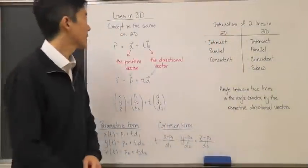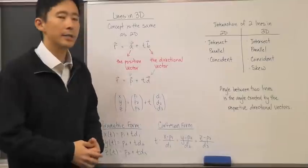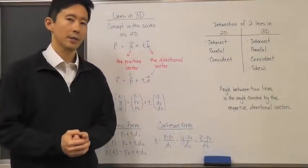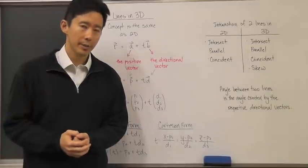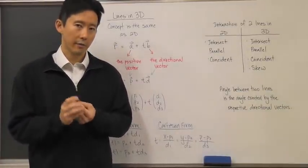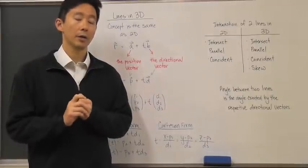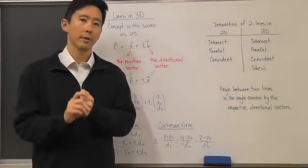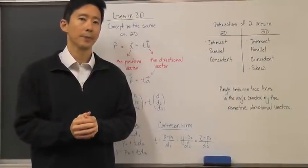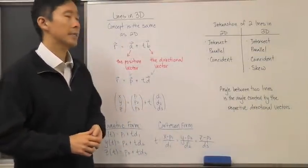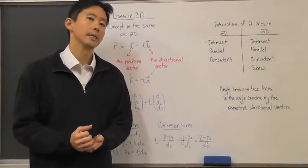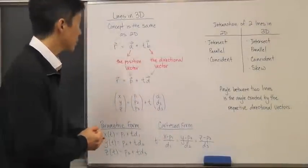Let's take a look at lines in three dimensions. In the previous section we looked at lines in two dimensions, which have three forms: the Cartesian form, the parametric form, and the vector form. These forms are all related to each other, and now we want to extend that to the three-dimensional case.